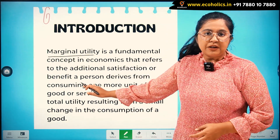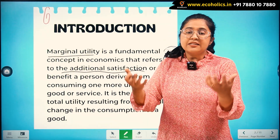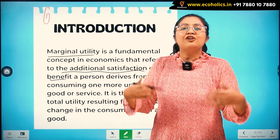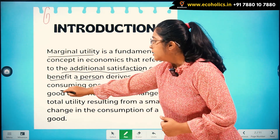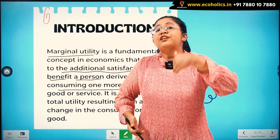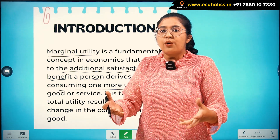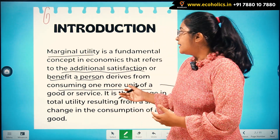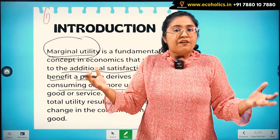Marginal utility can be called as a conceptual function where we say that when an additional satisfaction is received — that refers to the additional satisfaction, additional benefit, or additional utility derived — it is derived by a person from consuming one more unit of a commodity or a service. The addition to your satisfaction, the addition to your utility, the addition to your benefit when one more unit of the same commodity is consumed by you — that is known as the marginal utility concept.